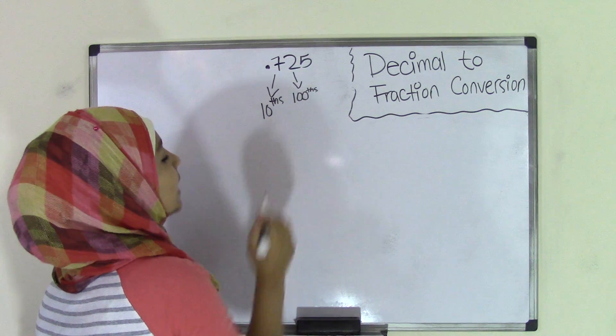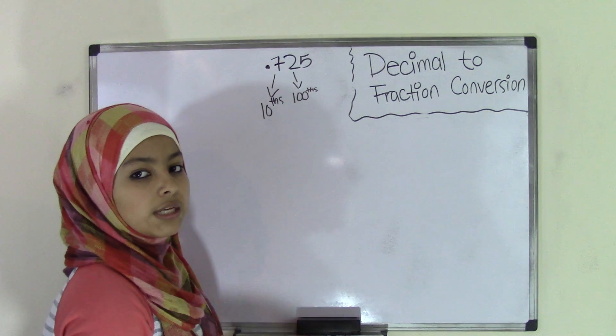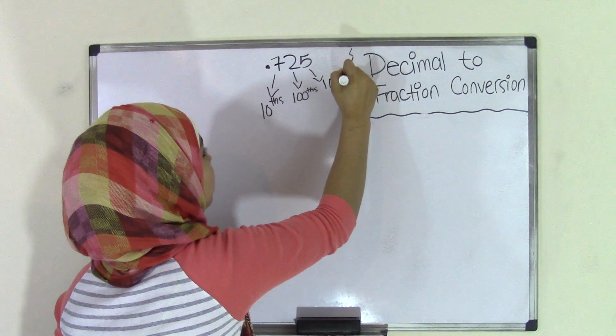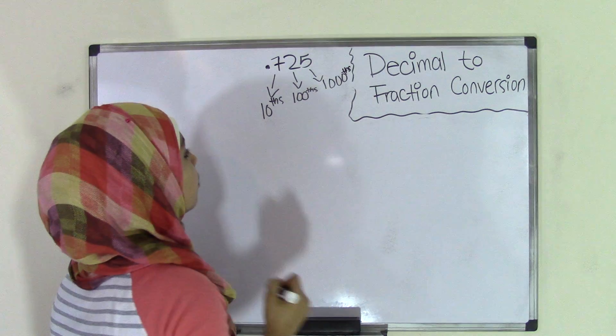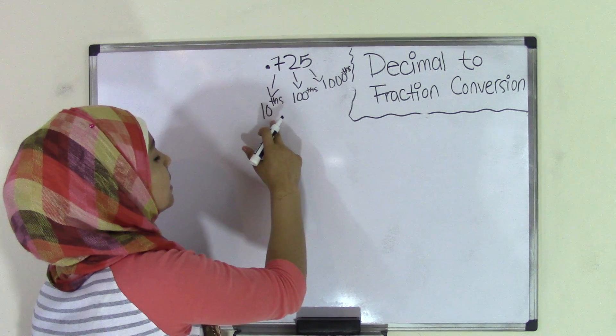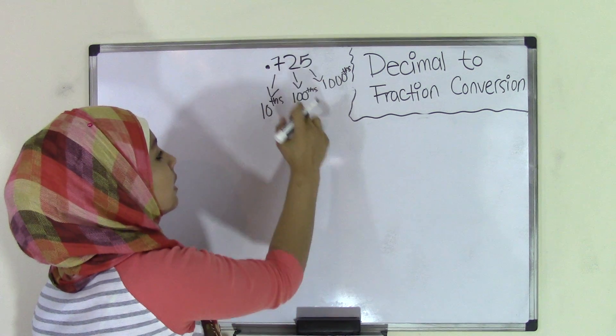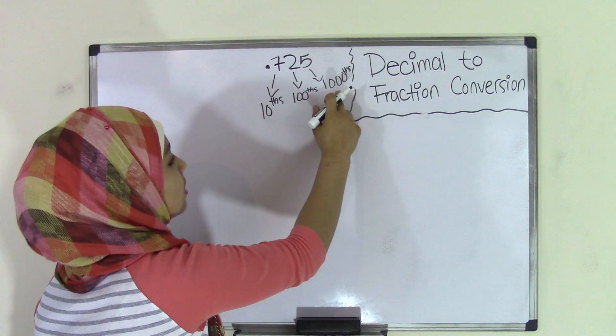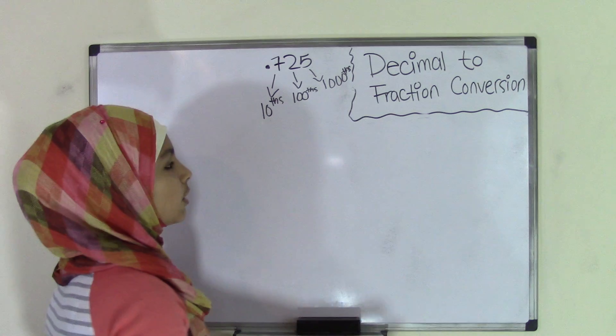And now the last digit in this case is 5, and that is the third digit from the decimal point. So that means it holds the place value of thousandths. So that means 7 is in the tenths place or 7 over 10, 2 is in the hundredths place or 2 over 100, and 5 is in thousandths place or 5 over 1,000.